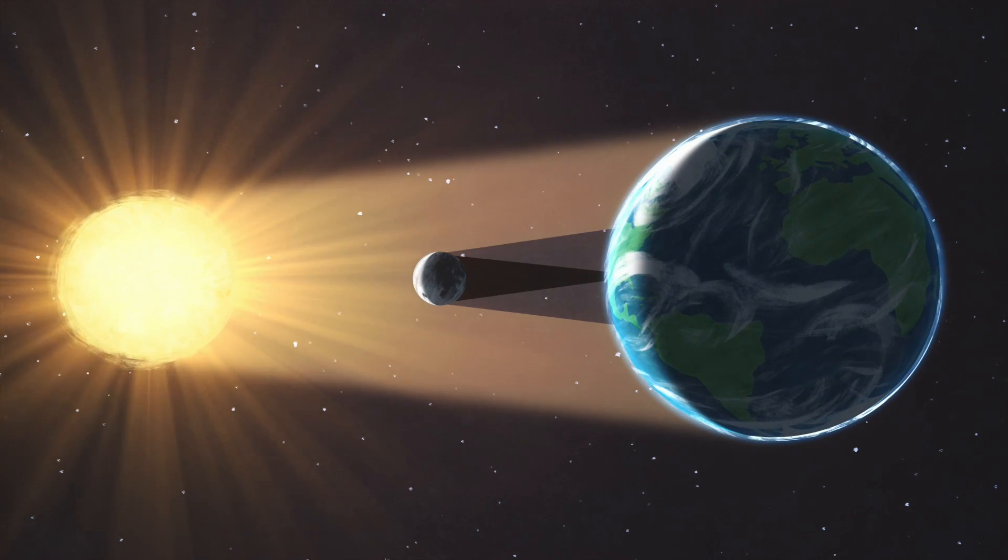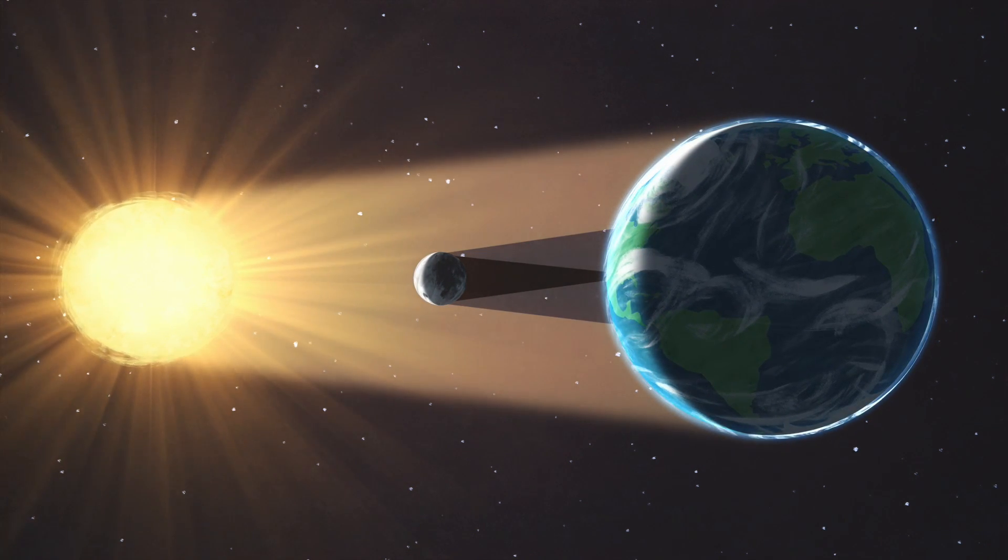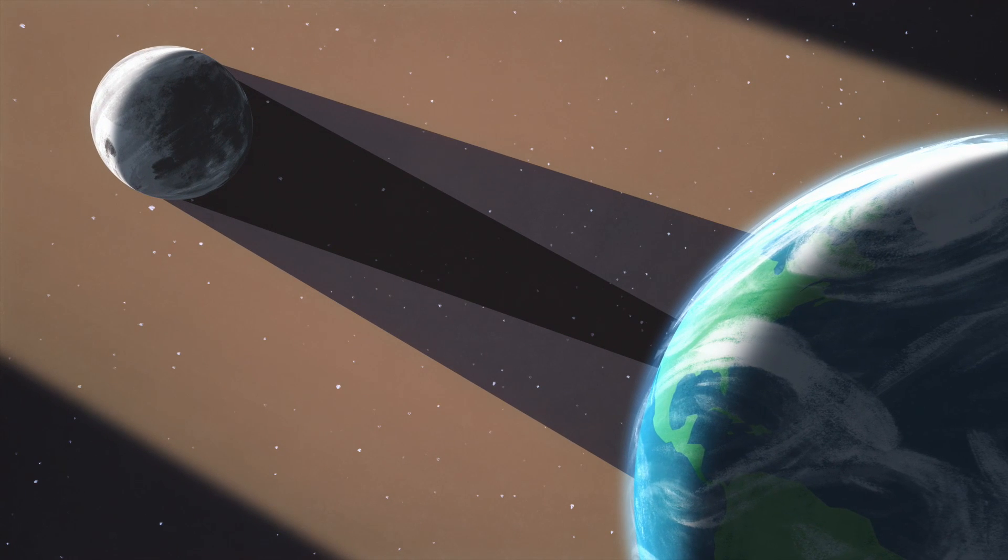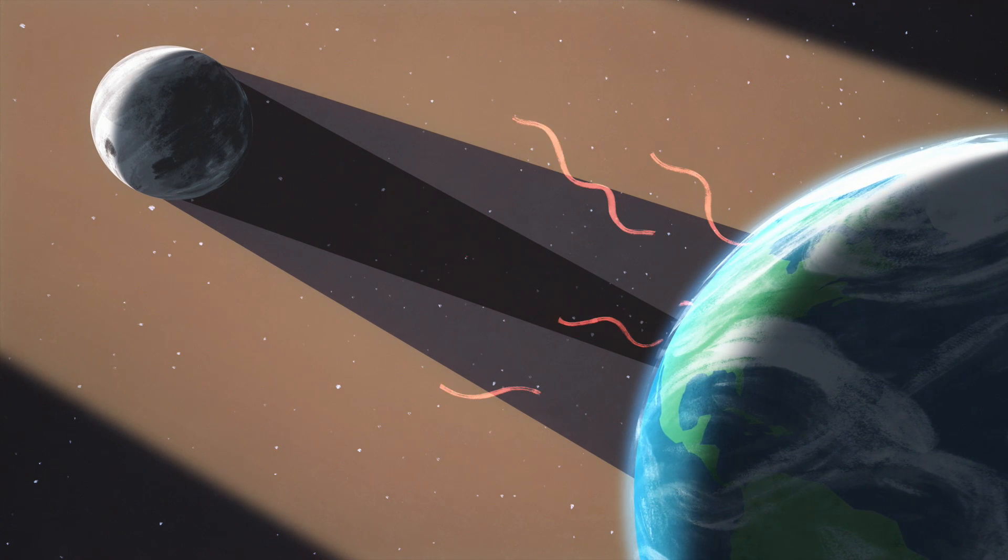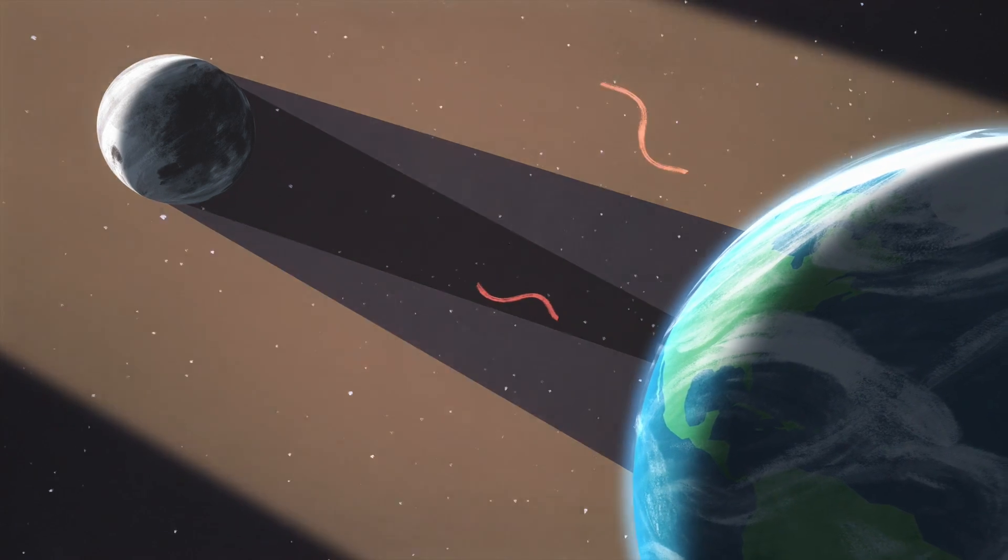Because we already know the exact shape and makeup of the moon, scientists can use the natural phenomenon to develop new calculations that could improve estimates of Earth's energy system and answer questions about Earth's climate.